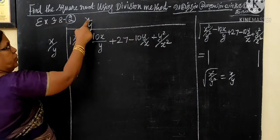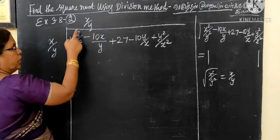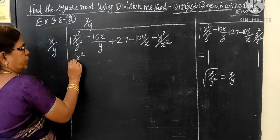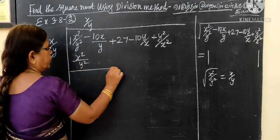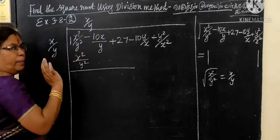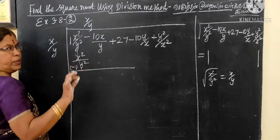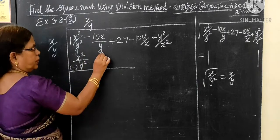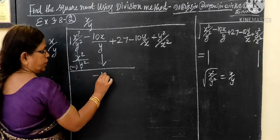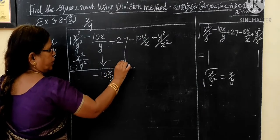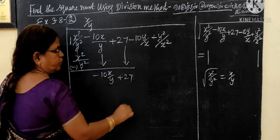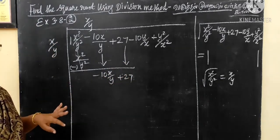Then x by y times x by y is x squared by y squared. This is the first time. This minus cancels automatically. Then minus 10x by y plus 27. This is the second step.